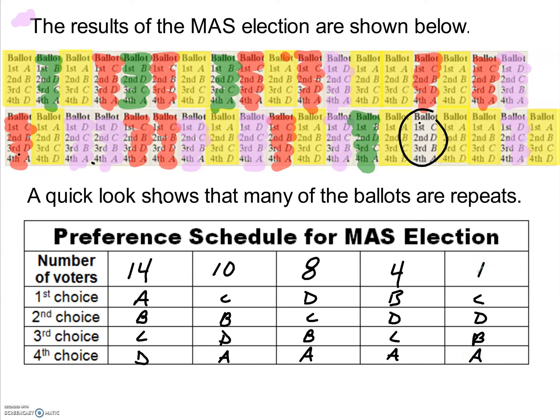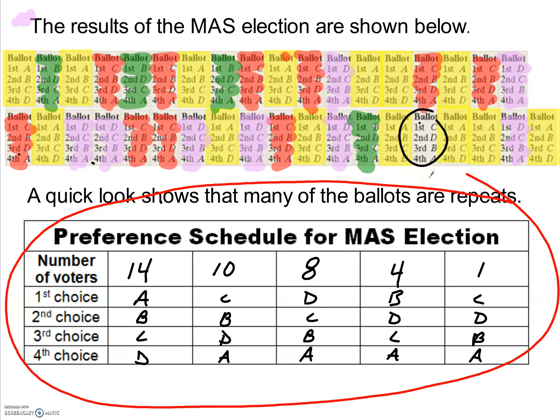So that completes our preference schedule. Once we build this preference schedule, it becomes really easy to make choices and understand who wins elections based on different ways to count the votes. The key — the absolute key — is the ability to successfully build this preference schedule from a collection of ballots. It's not difficult, just a little tedious, but it's something you need to be able to do.